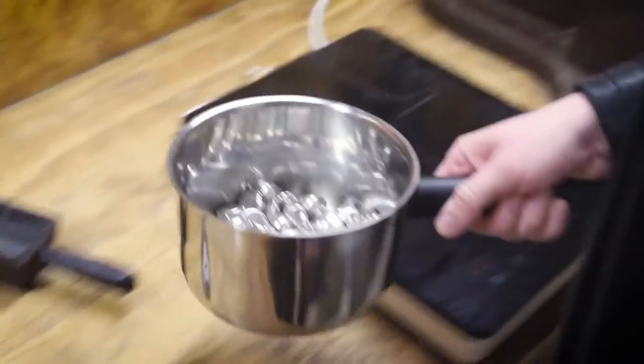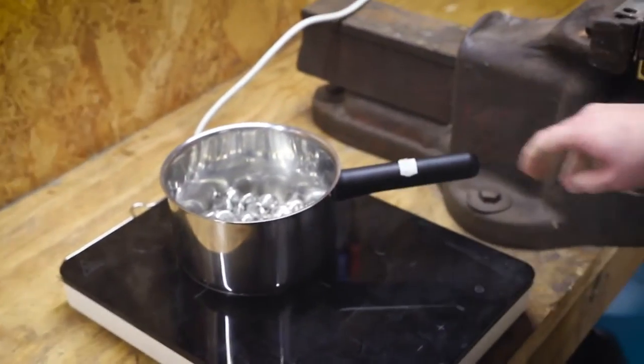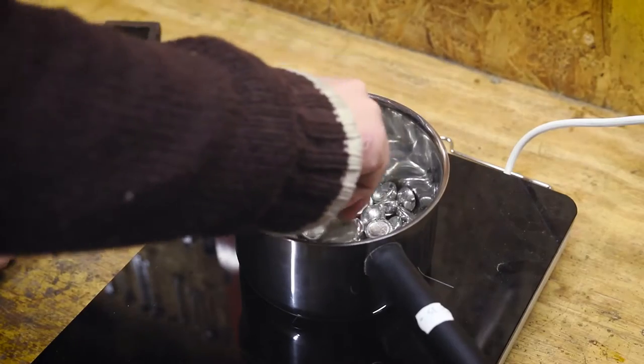Thanks to tin's low melting point at 232 degrees Celsius, it can be melted in a pot on a stove.